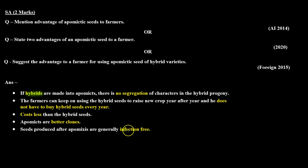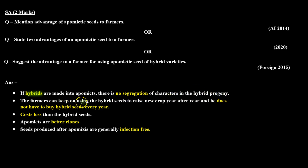If hybrids are made into apomicts, there is no segregation of characters in the hybrid progeny. The farmers can keep on using the hybrid seeds to raise a new crop year after year and do not have to buy hybrid seeds every year.